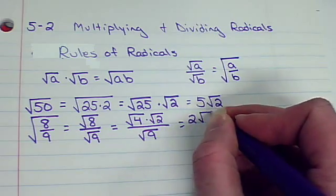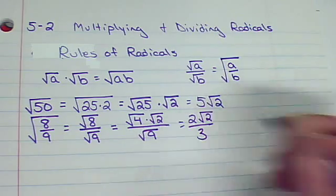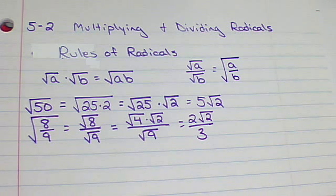That's a 2. Square root of 2 over 3. So, that is one way to use the rules of radicals to actually help simplify.